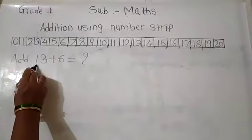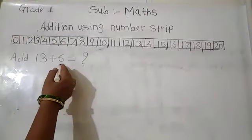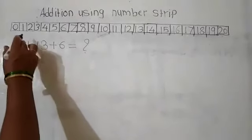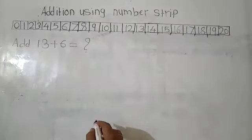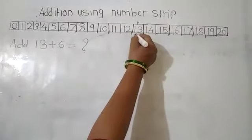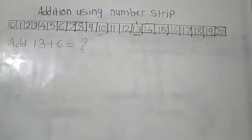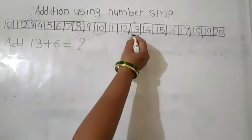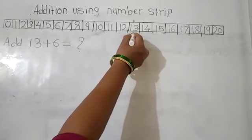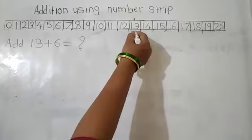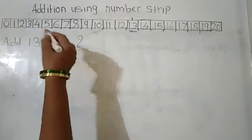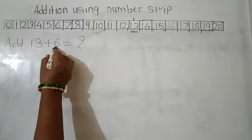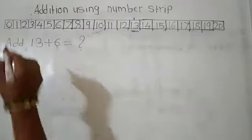Here, add 13 plus 6. First we have to find number 13 on the number strip. We got 13. This is number 13 and we have to add 6. So keep your pencil on number 13 and move forward 6 steps, because we have to add 6 to 13.